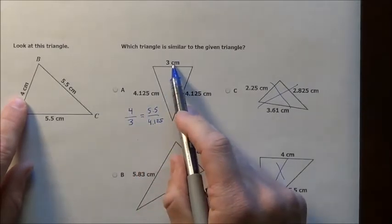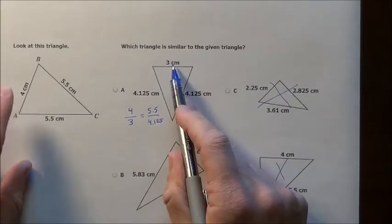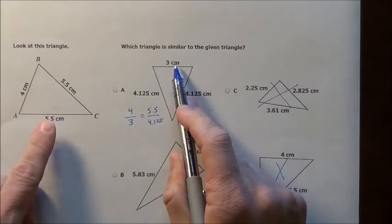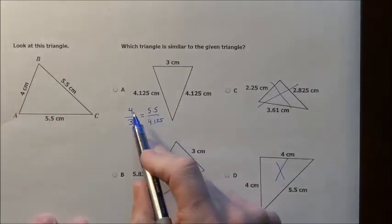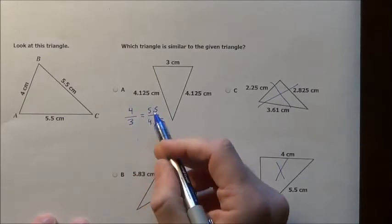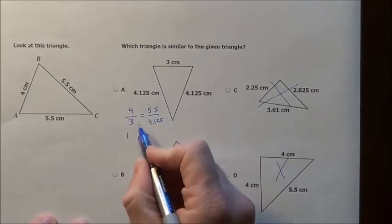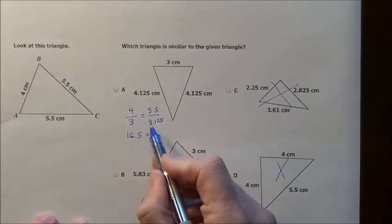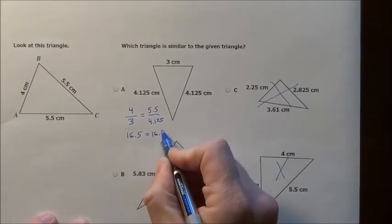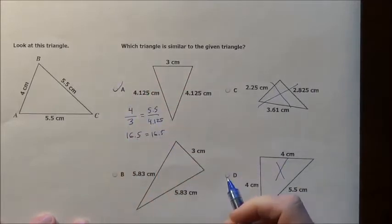the 4 to the 3, because this is the shortest side and that is the shortest side. So 4 corresponds to the 3 is equal to 5.5 corresponding to 4.125. If they are similar, this will be a true statement. We can cross multiply. 5.5 times that gives me 16.5 and 4 times that looks like it is going to work. It is going to be choice A here.